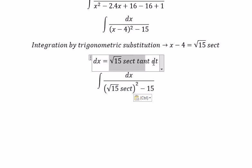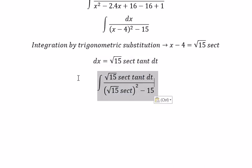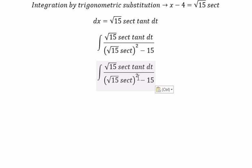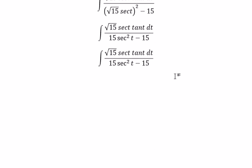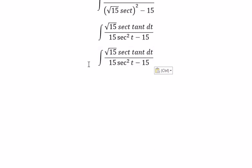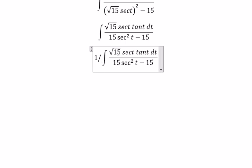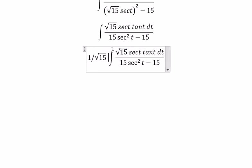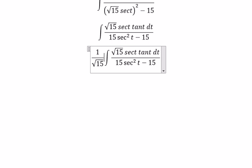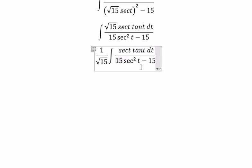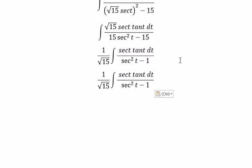We change x to this substitution. This gives us 15 secant² t. We can factor out the square root of 15, giving us 1 over the square root of 15. Here we change to the square root of 15, and this becomes tan² t. The tan² t terms simplify to 1.